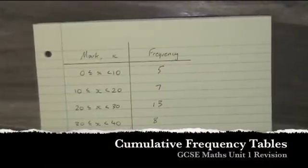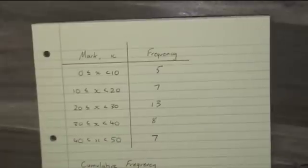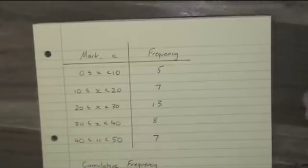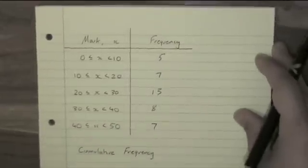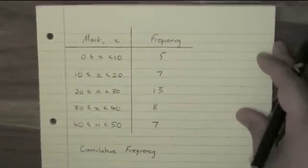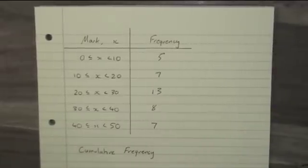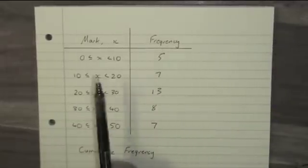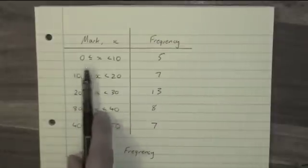Making cumulative frequency tables from a group frequency table. This is a group frequency table, as you can see. It shows the marks in a test and how many people scored those marks. So this is saying that five people scored between 0 and 10.